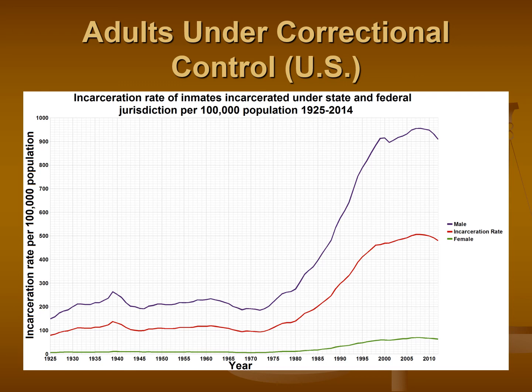Then, perhaps most alarmingly, starting in the mid-70s right up until around 2007-2008, we see what has led to our prison industrial complex and our booming correctional system. Looking at that red line, we don't just see an increase starting around 1975 — we see an exponential climb in the rate of incarceration, so that by the early 2000s the rate is over 500 individuals per 100,000. That's a five-fold increase over just a few decades.